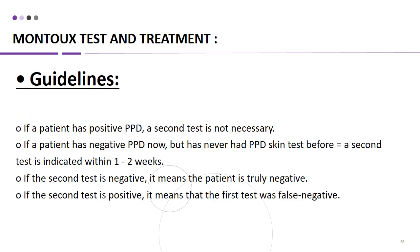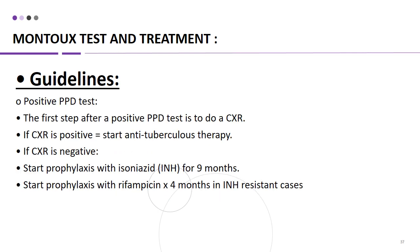Guidelines: if a patient has a positive PPD, a second test is not necessary. If a patient has a negative PPD but has never had PPD skin testing before, a second test is indicated within 1–2 weeks. If the second test is negative, the patient is truly negative; if positive, the first test was false negative. After a positive PPD test, the first step is a chest X-ray. If the chest X-ray is positive, start anti-tuberculous therapy. If the chest X-ray is negative, start prophylaxis with isoniazid for 9 months, or rifampicin for 4 months in isoniazid-resistant cases.